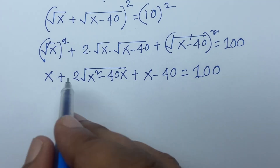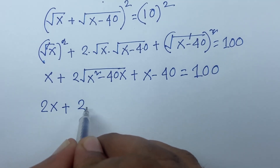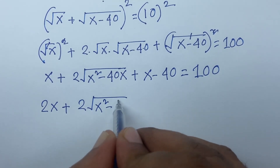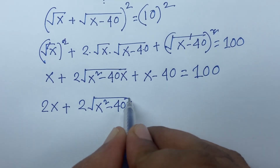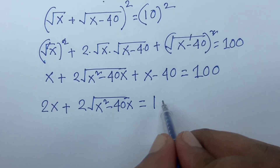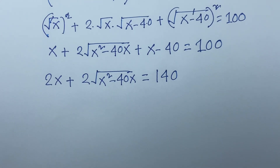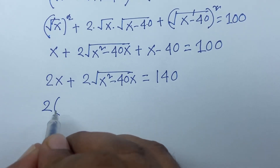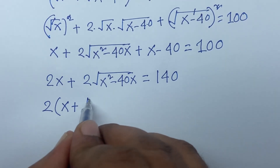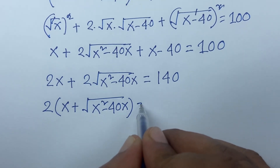Combining like terms: x plus x gives 2x, so we have 2x plus 2 times square root of x squared minus 40x equals 140. Factoring out 2, we get x plus square root of x squared minus 40x equals 70.